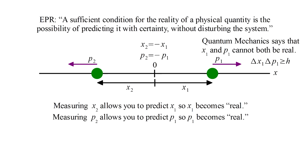If we instead measure the momentum, p2, then we can predict p1 with certainty, again without having disturbed particle one. So p1 becomes real.